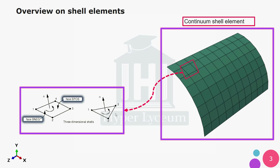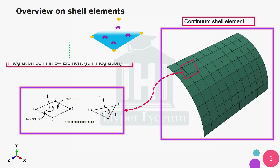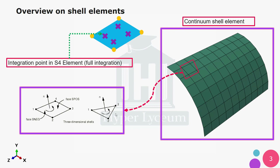It is the same for hex elements and tetrahedral elements — the lower side is called SNEG and the upper side is called SPOS. In the full integration element like the S4 element there are four integration points on each surface.